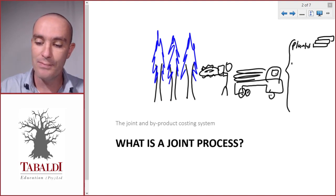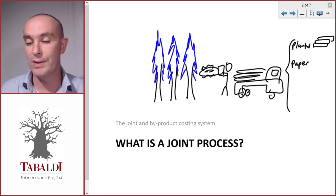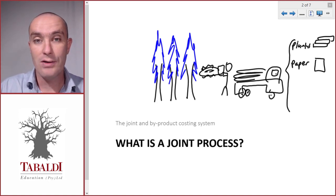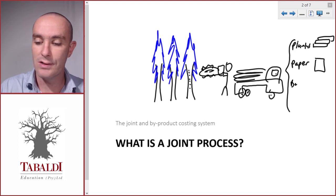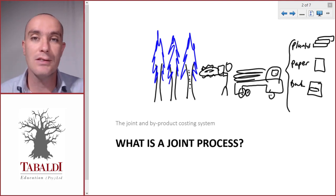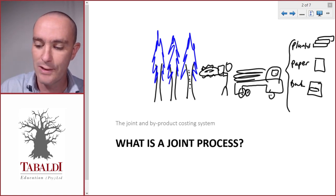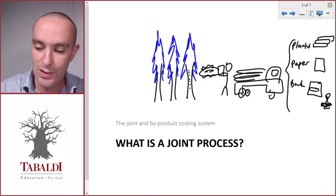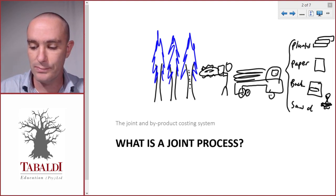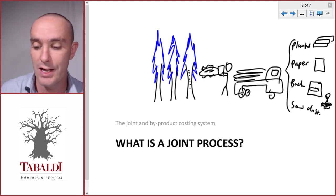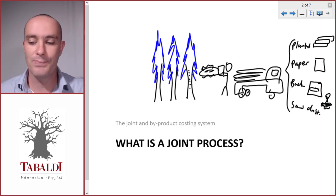Some of the wood will be pulped and used to make paper. The bark stripped from the trees can be packaged and sold to nurseries or plant growers who use it as mulch — thrown around plant roots to prevent moisture from evaporating. Finally, the cutting process produces lots of fine sawdust that collects on the floor.